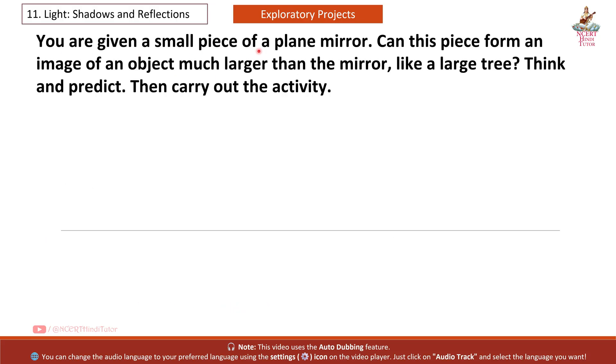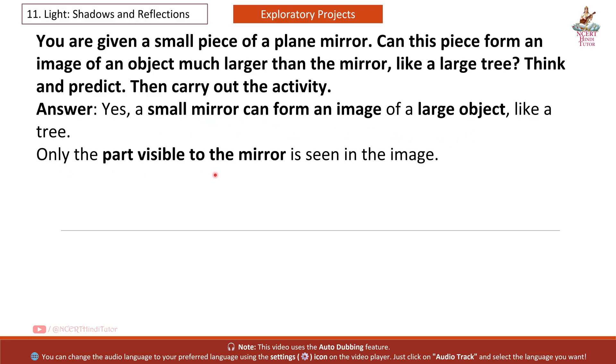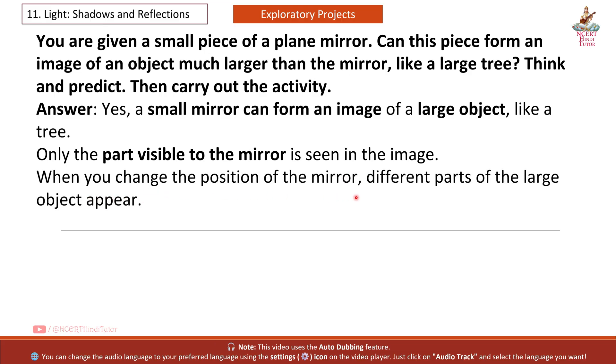Next, you are given a small piece of a plane mirror. Can this piece form an image of an object much larger than the mirror, like a large tree? Think and predict, then carry out the activity. Answer: Yes. A small mirror can form an image of a large object, like a tree. Only the part visible to the mirror is seen in the image. When you change the position of the mirror, different parts of the large object appear.